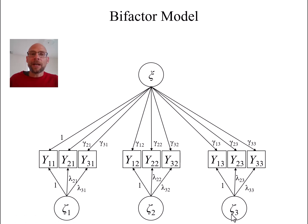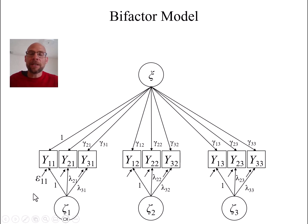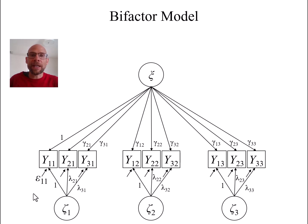That situation-specific deviation would be reflected in these specific factors, which capture time-specific or occasion-specific influences on measurements — where measurements deviate from the typical level due to situation-specific influences or events at that time point. In addition to the general and specific factors, a bifactor model also includes measurement error variables that characterize random measurement error in the observed scores.